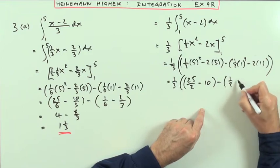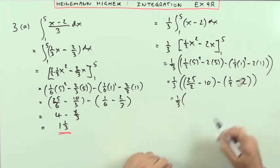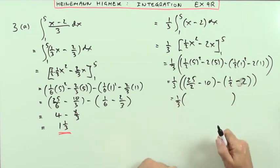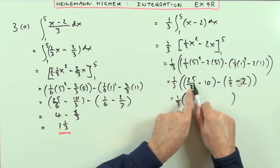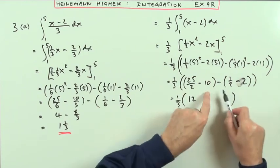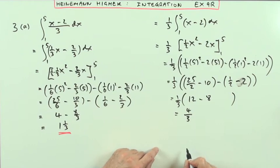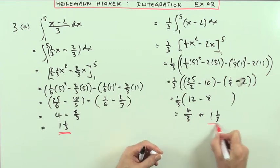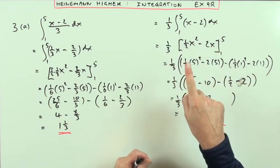Minus a half, minus 2. So it's a third of that bracket. Letting the halves work together: 25 over 2 minus a half is 24 over 2, which is 12, and negative 10 plus 2 is negative 8. Now let the third in — it does its dividing and you've got 4 over 3, or one and a third. Taking out a common factor can simplify the arithmetic, but only if you're confident doing so.